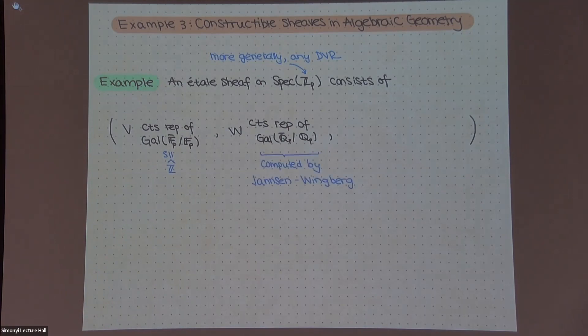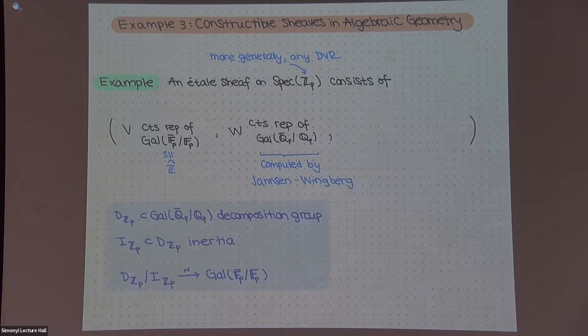And this Galois group is something that is well understood. It's just a profinite completion of the integers generated by the Frobenius. It has something at the other point, at the fraction field. So a representation of the Galois group of the fraction fields, which incidentally, people have computed completely with some generators and relation descriptions. So if you want to be very explicit, you could totally understand this.